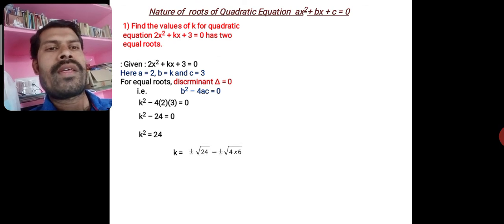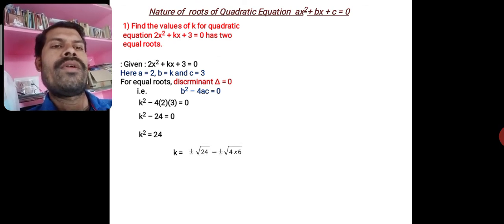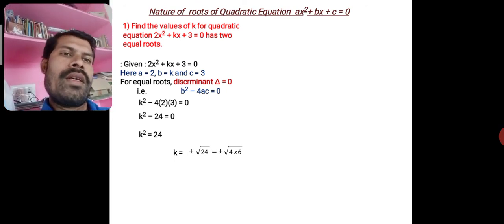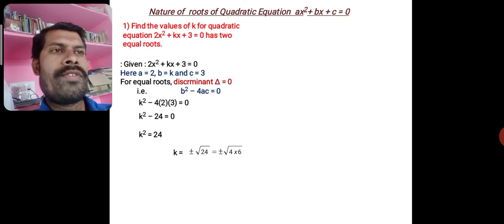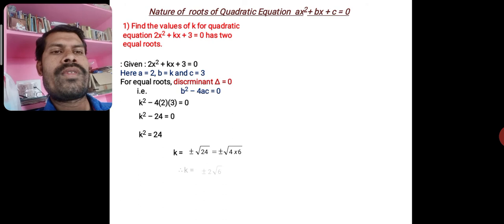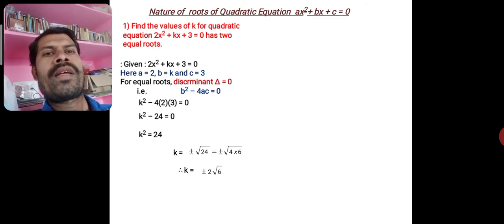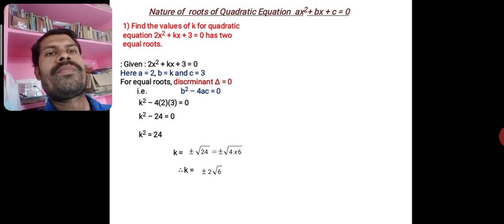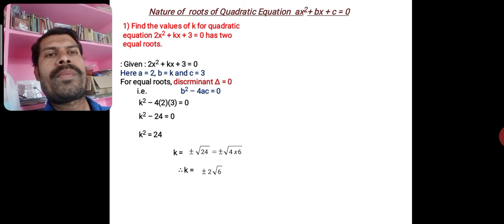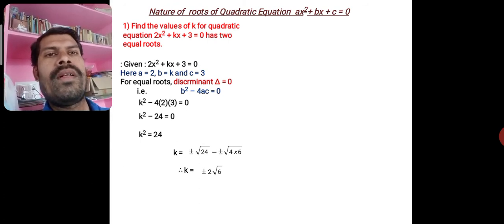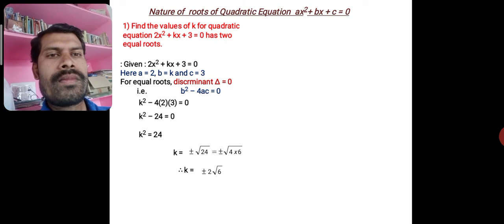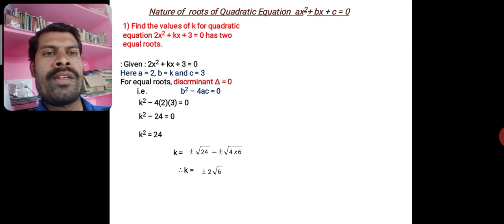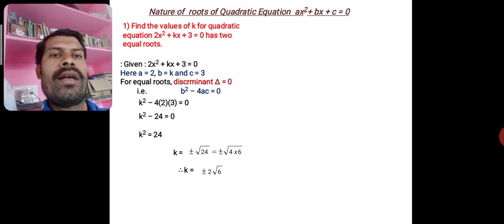So k² = 24. Taking the square root of 24 — split it as 4 × 6 — take 4 out of the square root, that gives 2√6. Therefore k = ±2√6. For these two values of k, the roots of the equation 2x² + kx + 3 = 0 become equal.